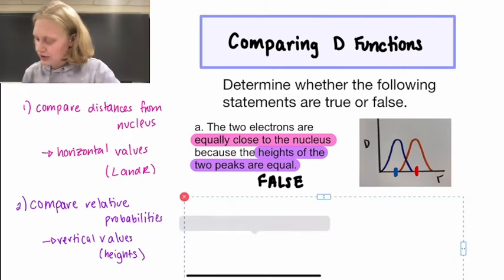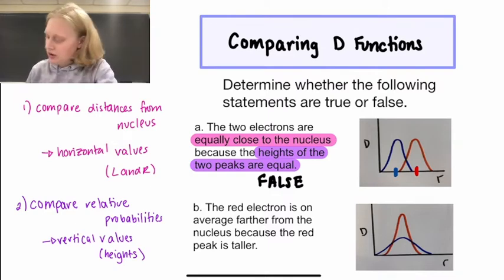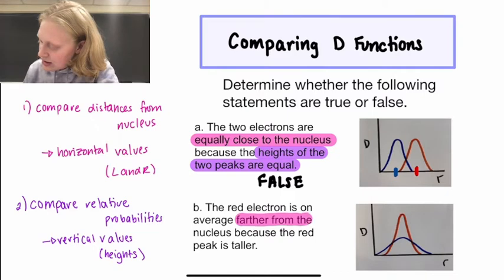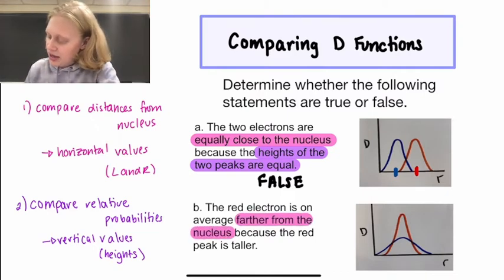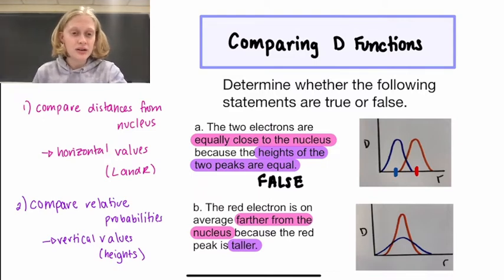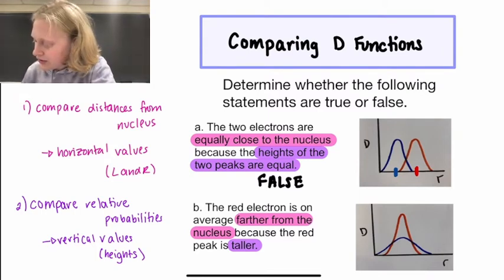Let's look at another statement. The next one says the red electron is on average farther from the nucleus because the red peak is taller. So once again, just like the last one, they're trying to use vertical values to compare distances from the nucleus. So this one is going to be false.